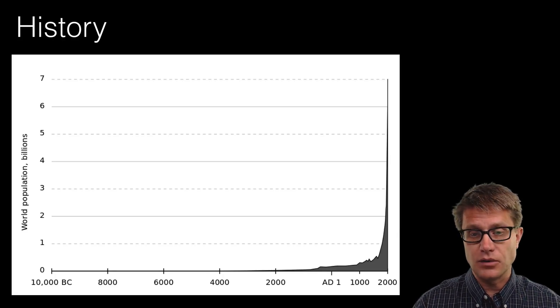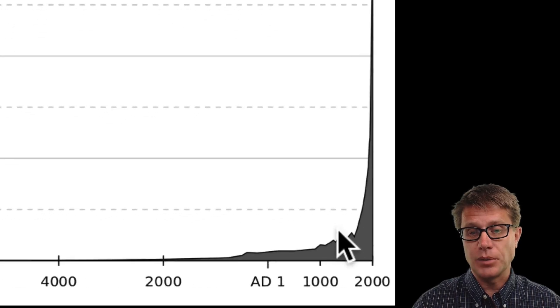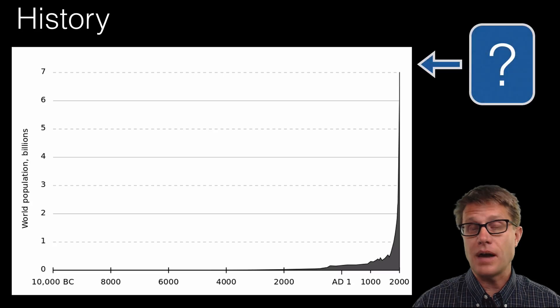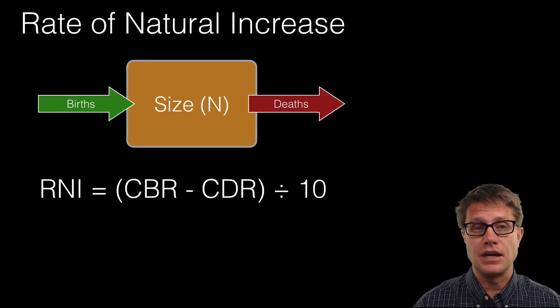Now there are some blips along the way. There is going to be the bubonic plague where a third of the people in Europe died. But you can see over time we are seeing massive increases. What happens next, we will talk more about that in the next video.